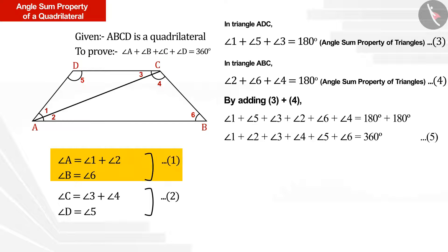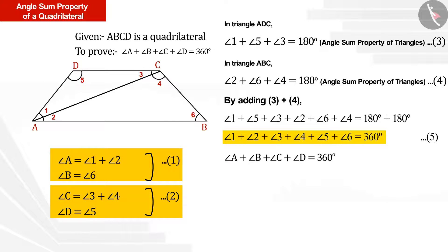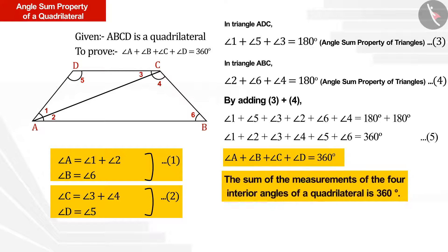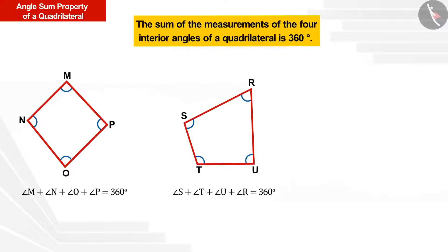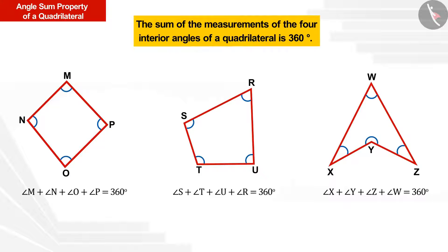Using equations 1 and 2, we confirm that the sum of all four angles of the quadrilateral equals 360 degrees. This is called the angle sum property of a quadrilateral, and it is true for both convex and concave quadrilaterals.